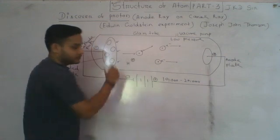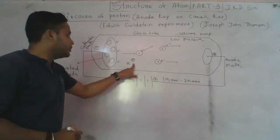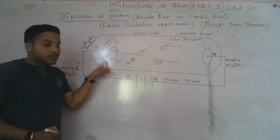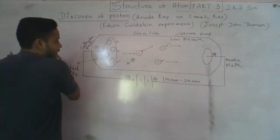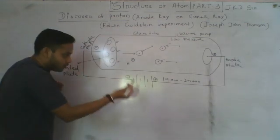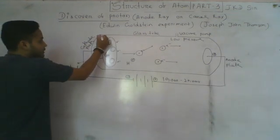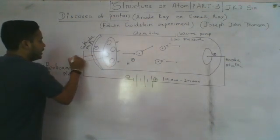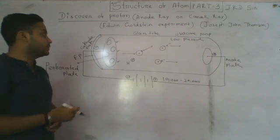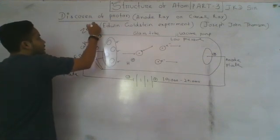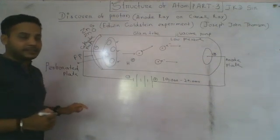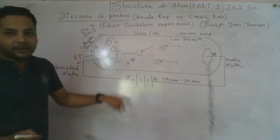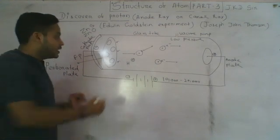The positive particles were deflected toward the negative plate — backing toward the negative plate. These positive particles traveled toward the negative plate and passed through the holes in the cathode plate. On the other side, a zinc sulfide or zinc oxide screen was placed to detect these particles.